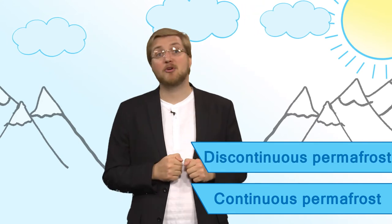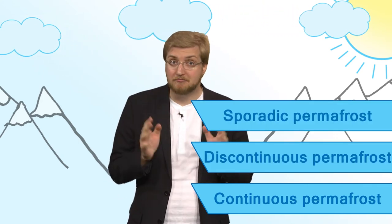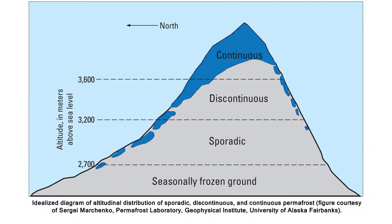One can distinguish several types of permafrost: continuous permafrost, discontinuous permafrost, and sporadic. Continuous permafrost occurs when the temperature in the ground is constantly below zero degrees over very large areas. For example, you find this kind of permafrost in Siberia in Russia.